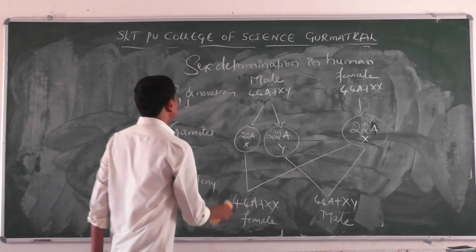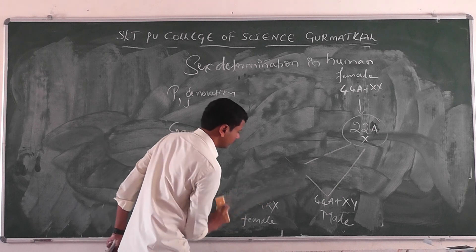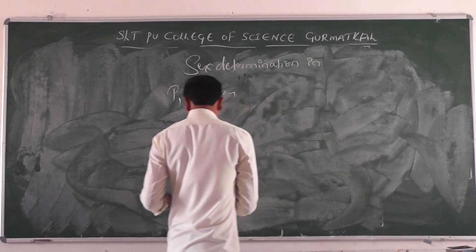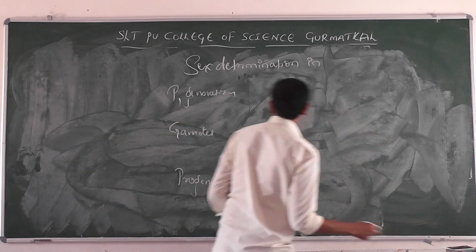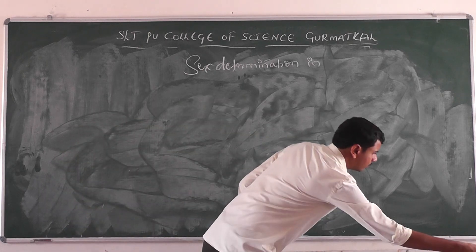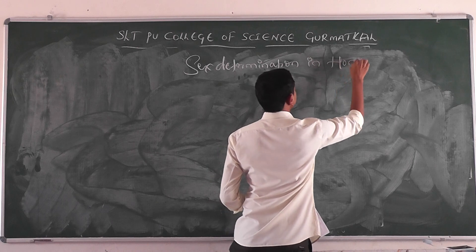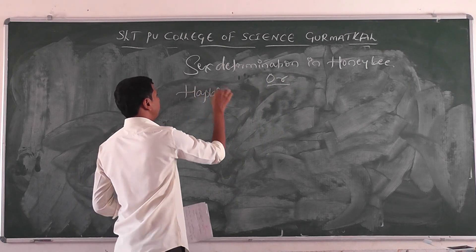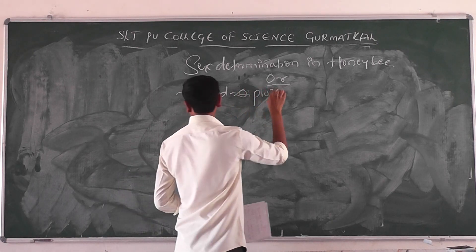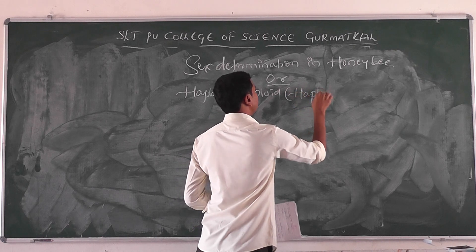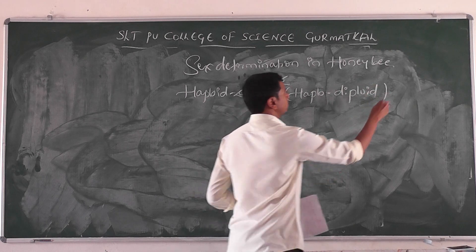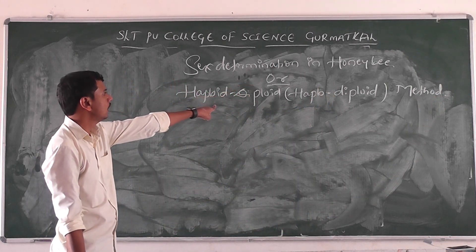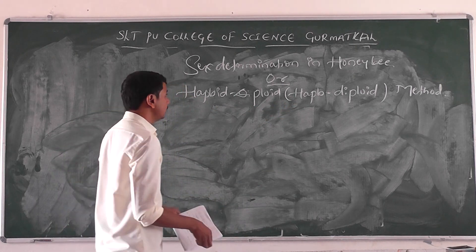Now we will concentrate on sex determination in the honeybee. This is also called the haploid-diploid or haplodiploidy method of sex determination in the honeybee.